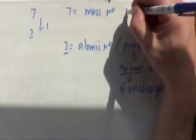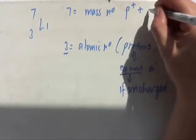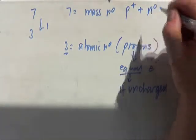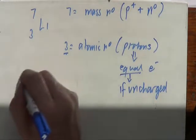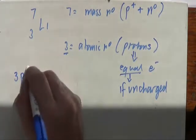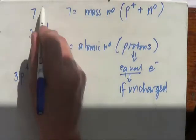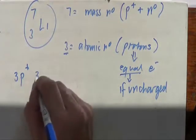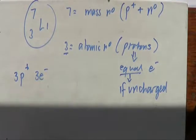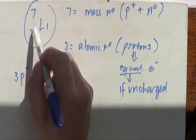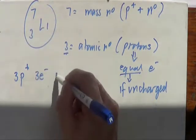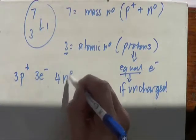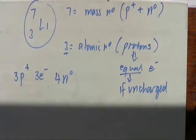The top number is the mass number, and that is the number of protons plus the number of neutrons — plus, not equal to. So in this instance with lithium we have three protons, and since there's no charge, we also have three electrons. The top number is protons plus neutrons, so three plus four — meaning in this atom we have four neutrons. I'll do another couple of these and then you can have a go yourself.